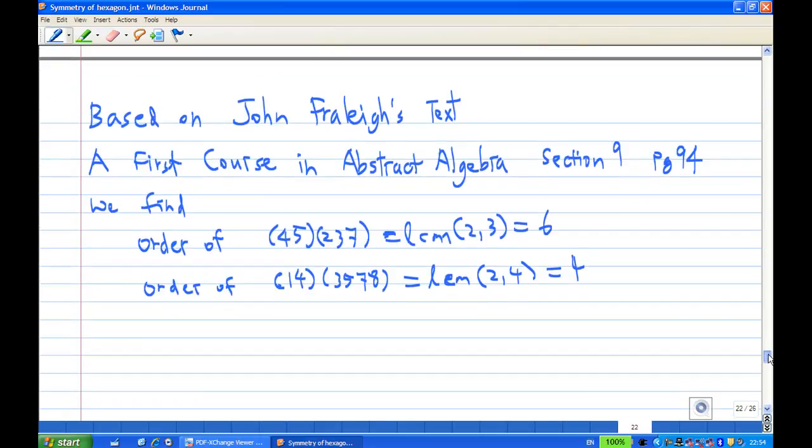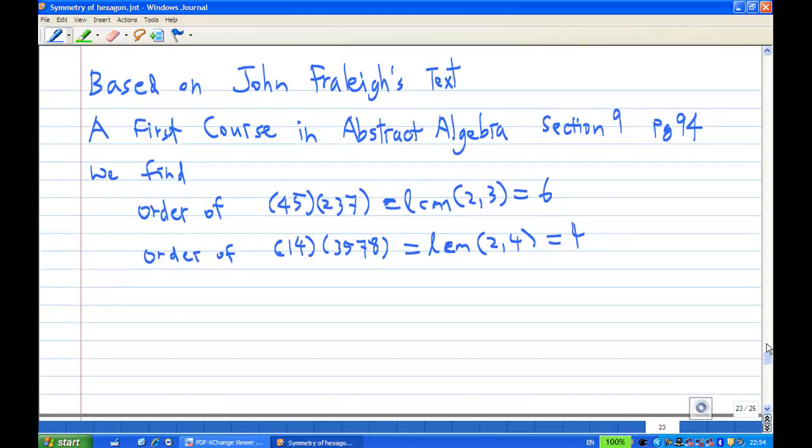Now, we're going to refer to John Fraleigh's text, First Course in Abstract Algebra, section 9, page 94. We find that the order of (4,5)(2,3,7) is actually the LCM of 2 and 3, which is 6. This is because (4,5) is a 2-cycle, (2,3,7) is a 3-cycle. They are disjoint cycles, so the order of this permutation is LCM of 2 and 3.